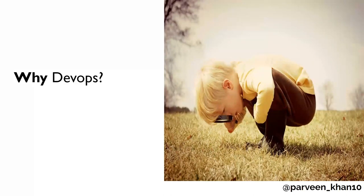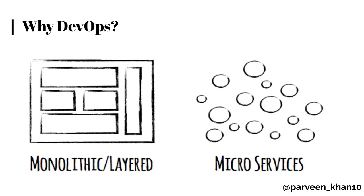My first question was: why DevOps? Before understanding what DevOps is, I wanted to understand why we were having it at all. I was curious. The first reason from my team was that we were moving from monolith to microservices architecture. We were rebuilding the product by breaking it into different modules, and the team wanted to merge code very frequently with more confidence. That was our first reason, and our first step toward DevOps was to start with continuous integration.